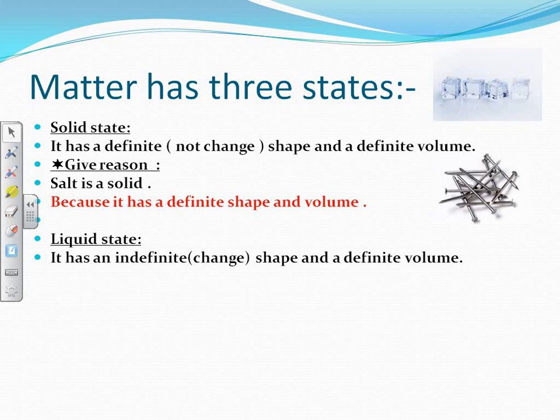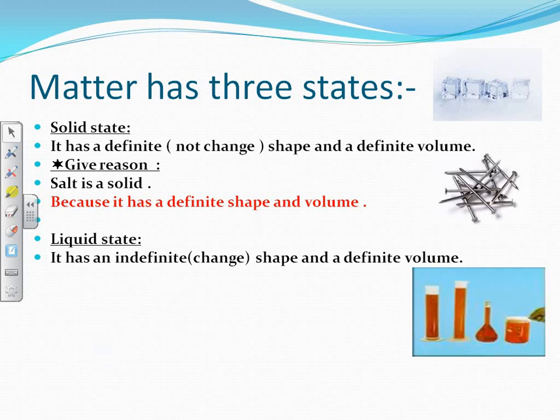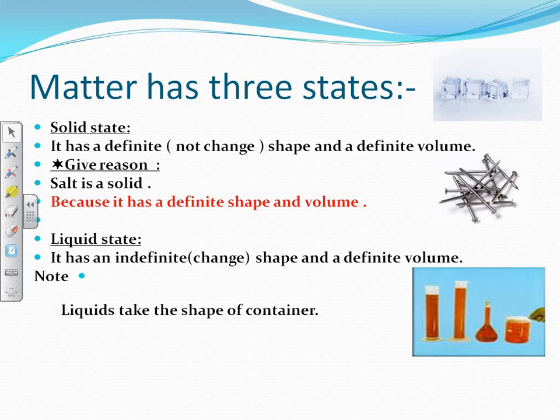Liquid state has an indefinite shape and definite volume — the shape changes but the volume is fixed or constant. If we pour water into different shaped containers, the water takes the shape of its container, but the volume remains definite. Liquids take the shape of their container.